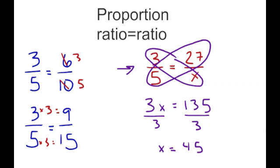If you plug that back in — 3 fifths is equal to 27 over 45 — you know that 3 times 9 is 27, and therefore 5 times 9 is 45. That confirms the proportion. So that's basically just solving proportions.